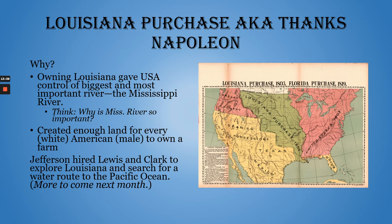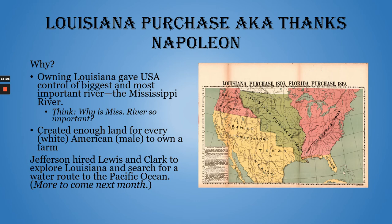The problem for Jefferson and the country was that no one really had any idea what was in Louisiana. It was a huge territory that Americans had never explored. It had belonged to France and to Spain before that, but even the French and Spanish hadn't really explored a lot of it. So Jefferson bought this huge piece of land and no one really knew what was there. The Federalists criticized him for that. I've heard it said that Americans knew more about the moon when we landed in 1969 than we did about Louisiana when we bought it in 1803.